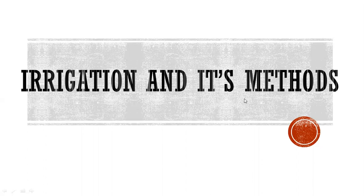Previously in this chapter we learned about the rivers of Pakistan — River Indus and its eastern and western tributaries. Today we will learn about irrigation and its methods that are used in Pakistan.